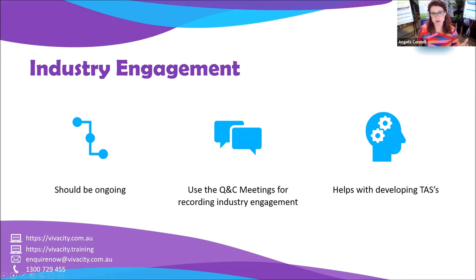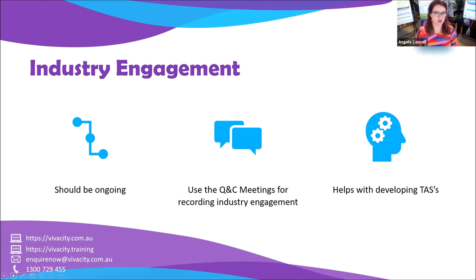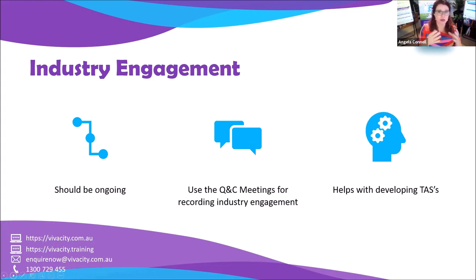You might want to do your surveys first, or start reviewing your TAS while you're waiting for surveys to come back — updating it to the latest training package requirements and how you're delivering. When you get the industry consultation back, incorporate it into your training and assessment strategy. There's no use doing industry consultation if you're not going to incorporate it. Your TAS should reflect what industry wants and their needs are — put the feedback in and address it.